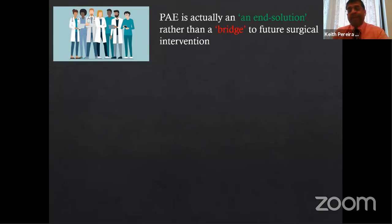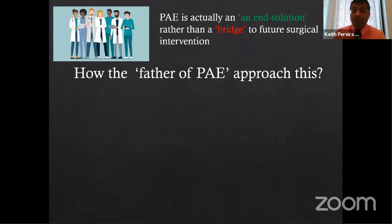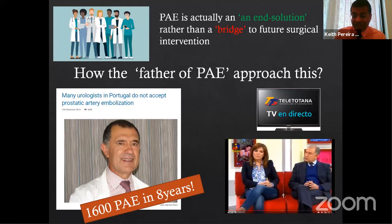Failed urological therapy is another great indication — many men in the US are saying they don't want TURP anymore, opting for UroLift which is less efficacious. If they fail urological therapy and want another option, PAE is excellent. Also mentioned: devascularizing the prostate prior to prostatectomy or radiation treatment. A multidisciplinary approach is best. In the interventional radiology world, we are moving toward being our own specialty — with our own clinics, rounding on patients, being the ones patients call. We should promote IR therapies as end solutions, not just bridges to surgery.